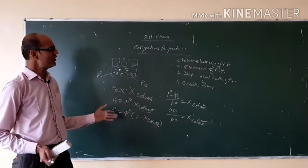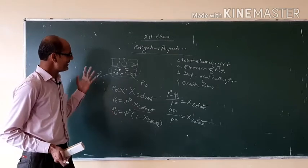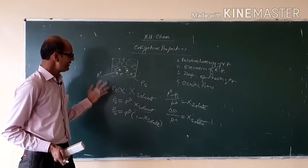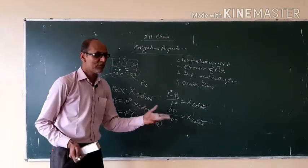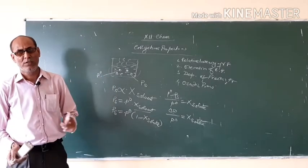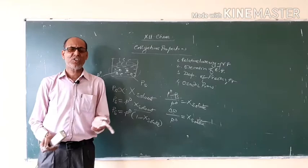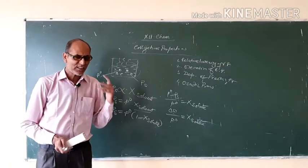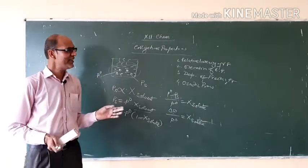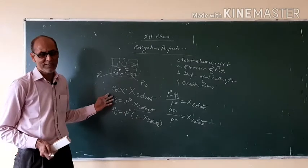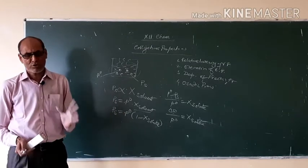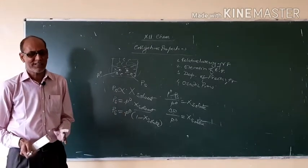This is the first colligative property. In this property we can calculate the molecular mass of unknown solute or you can find the vapor pressure of the solution. The method used for the measurement of vapor pressure of the solution is Ostwald's dynamic method.